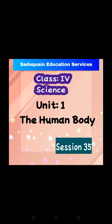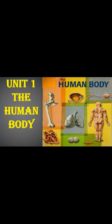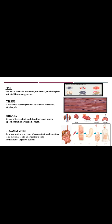Let's start our work now. How is our body made up of? Our body is made up of cells. The cell is the basic structural, functional and biological unit of all known organisms. When different cells are combined together, they form a tissue.